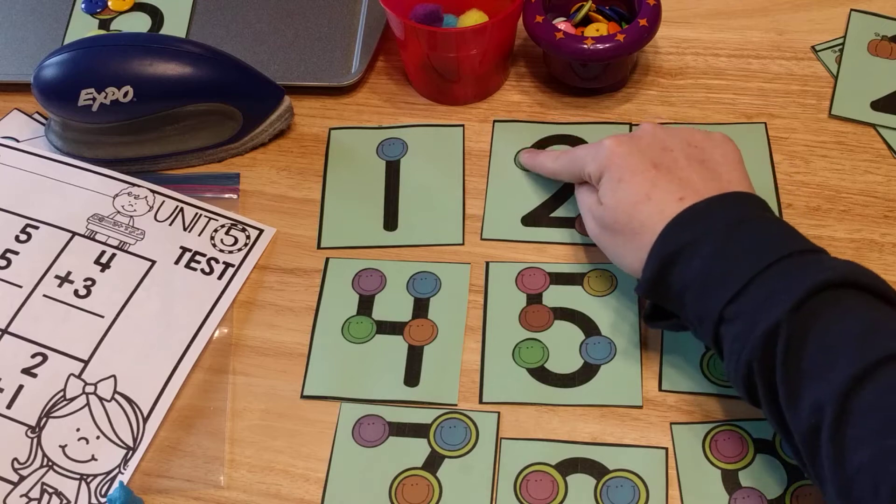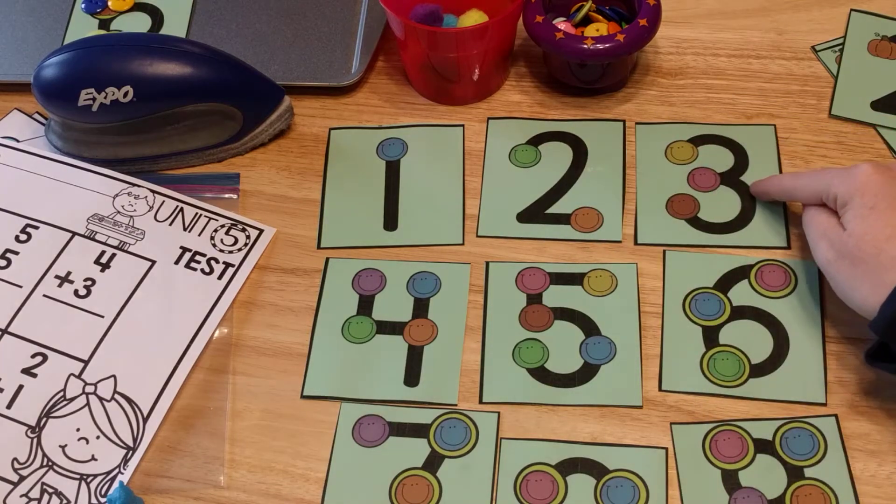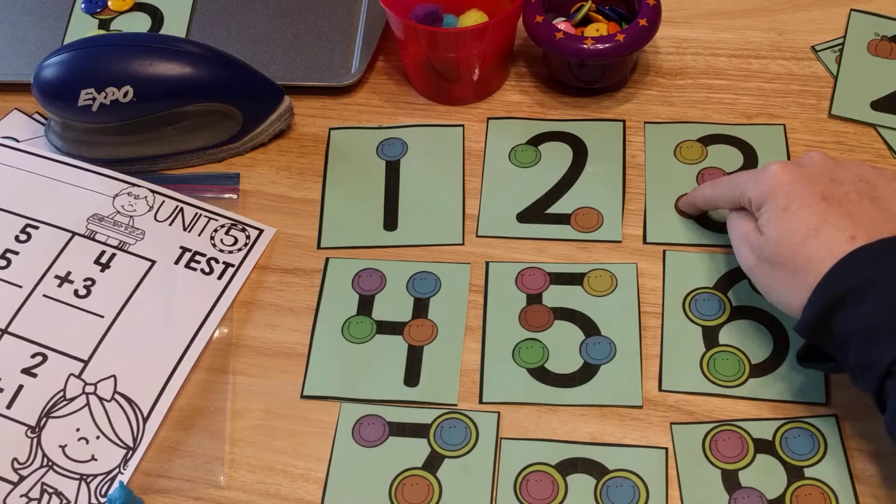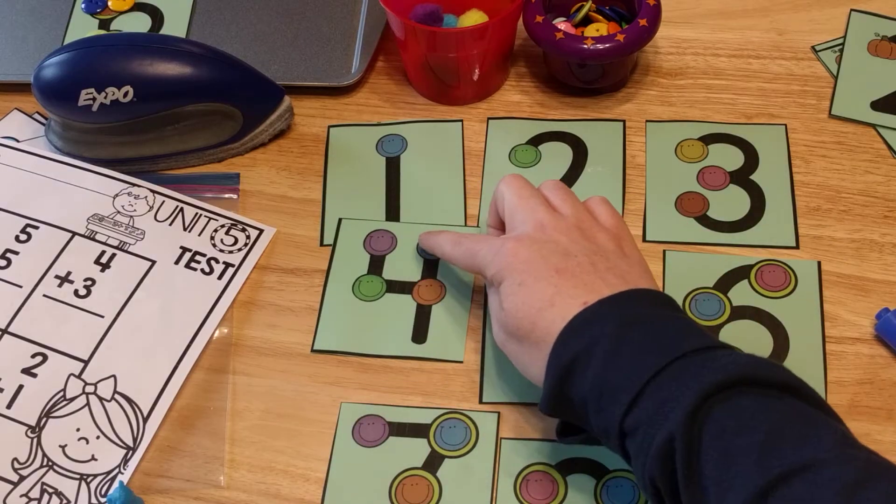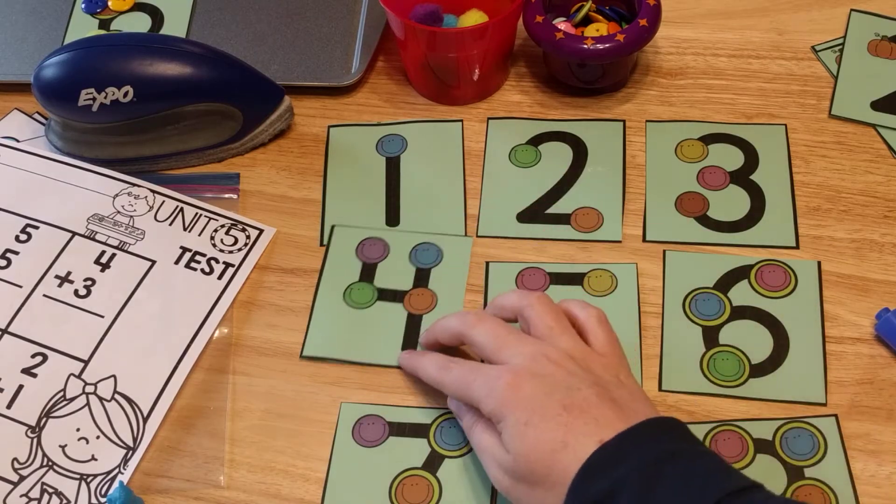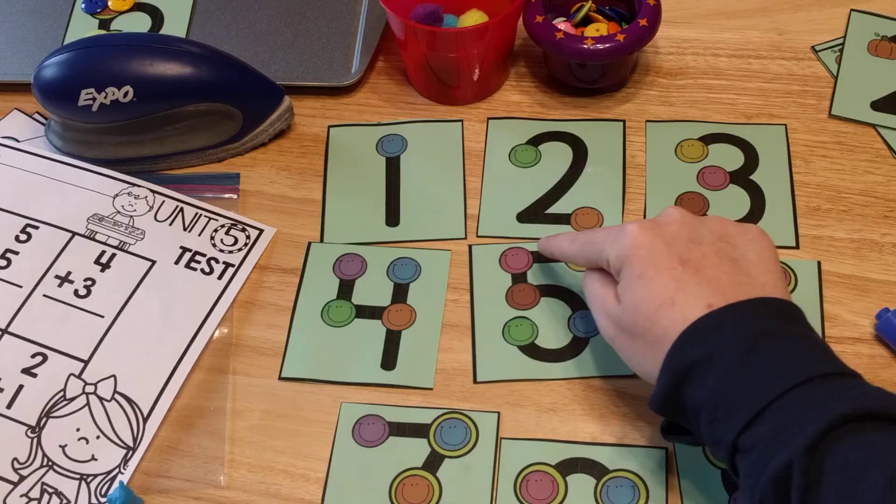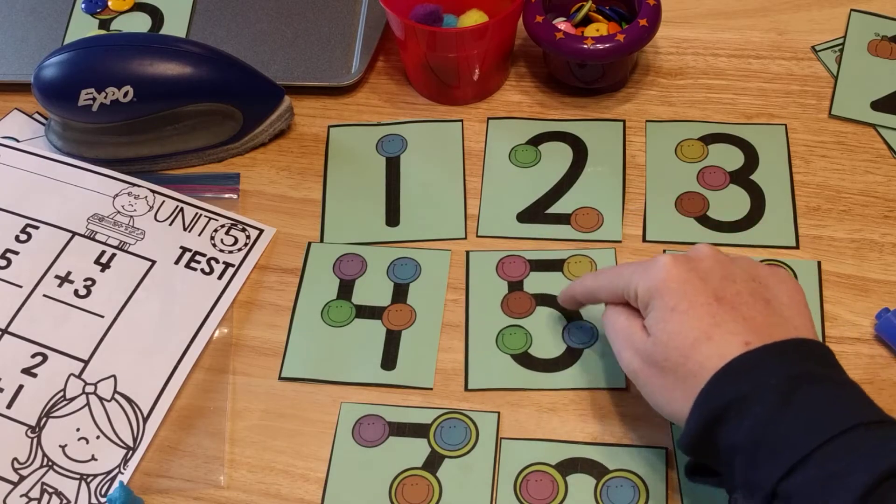For the number two, one, two. For the number three, one, two, three. Here's the one for the number four, one, two, three, four. The number five, one, two, three, four, five.